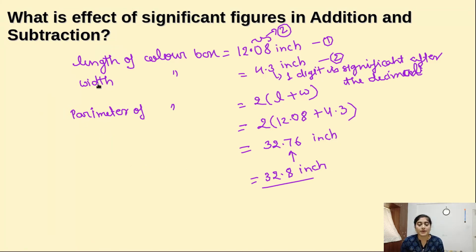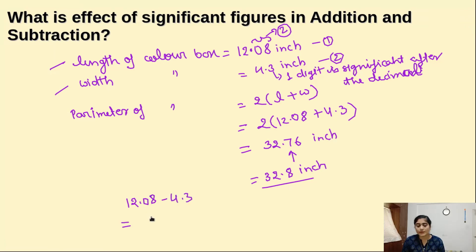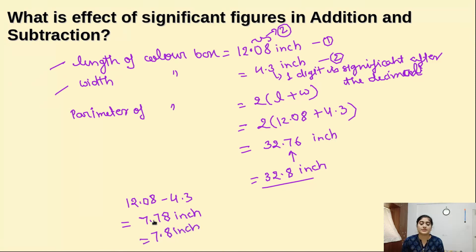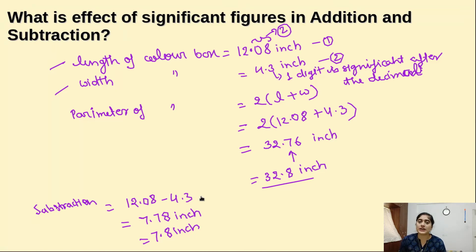For subtraction, taking the same two values — 12.08 minus 4.3 — the answer is 7.78 inches. The same rule as addition applies: after the decimal, we take only one significant digit, so the answer rounds to 7.8 inches. For addition and subtraction, we look at which value has the fewest significant digits after the decimal, and we use that count in the final answer.